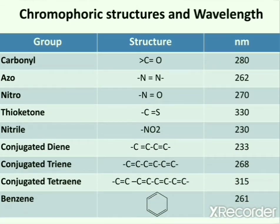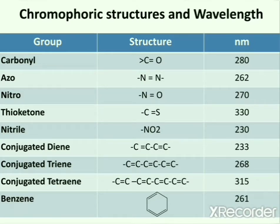Now chromophoric structures and wavelength — these are examples of chromophores. The carbonyl group shows characteristic wavelength absorption at 280 nm. Azo group at 262 nm. Nitro group at 270 nm. Thioketone at 330 nm. Nitro group at 230 nm. Conjugated diene at 233 nm. Conjugated triene at 268 nm. Conjugated tetraene at 350 nm. Conjugated benzene at 261 nm.